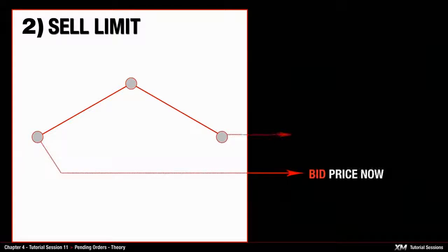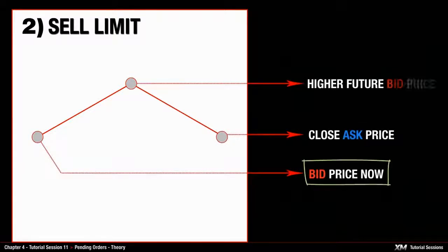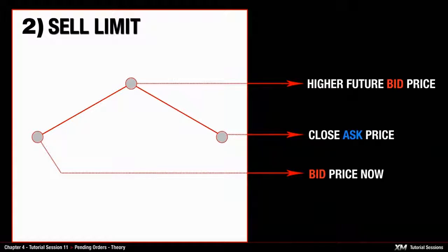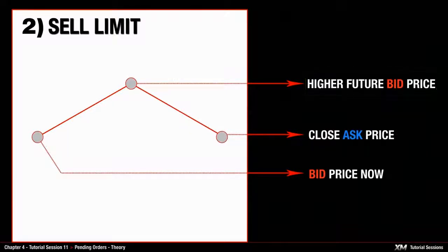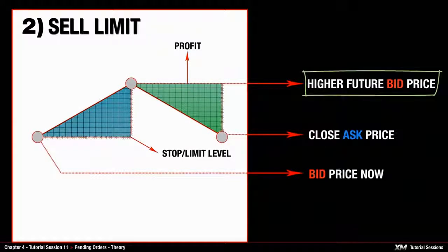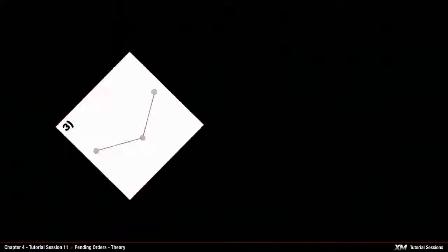Next comes the sell limit order. All sell orders are opened at the bid price and closed at the ask price. Sell limit orders must be opened at a higher future bid price. To make a profit on this type of order, the closing ask price must be lower than the opening bid price.